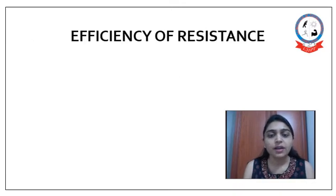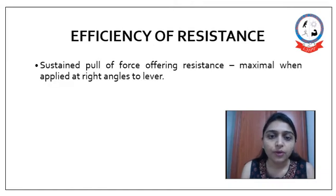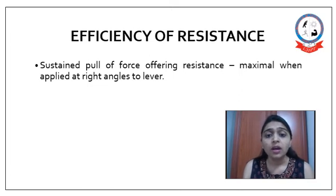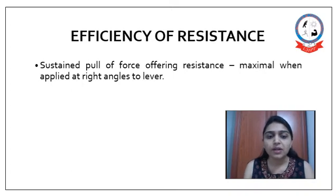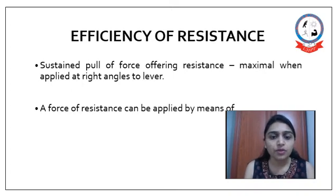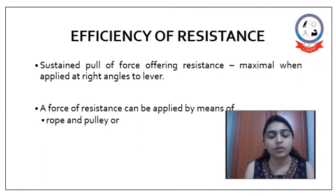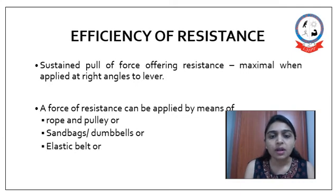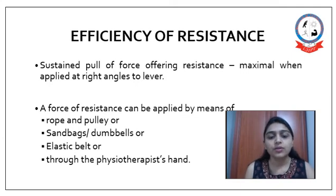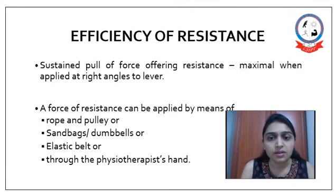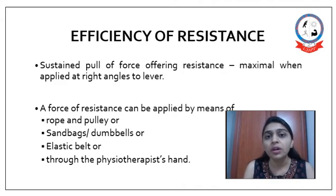Next we will see the efficiency of resistance. For resistance also, a sustained pull or push of force offered as resistance is maximal when applied at right angle to the lever. A force of resistance can be applied using a rope and pulley, sandbags and dumbbells, elastic belt, or the physiotherapist's hand. Any pull or push given as resistance gives maximal effect when applied at right angle to the lever — that is the moving bone.